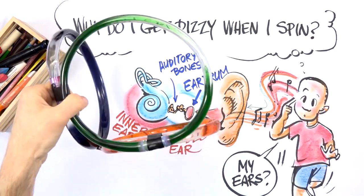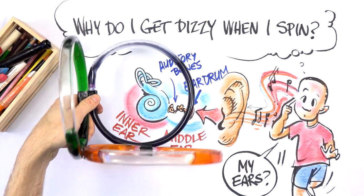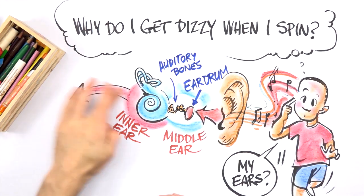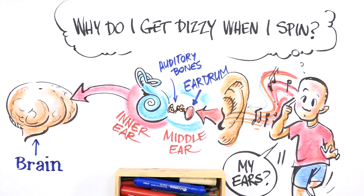So when you move your head, the fluid in those tubes moves too, and that moves the little tiny hairs. The hairs then send a signal alerting your brain that you've moved.